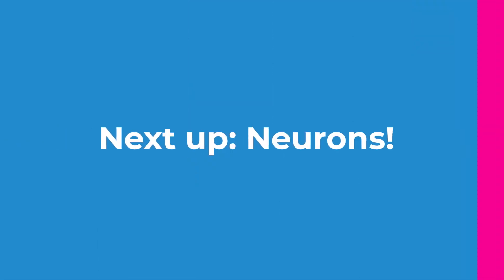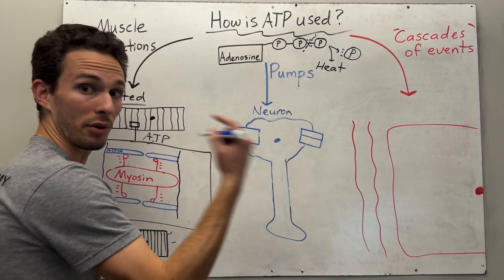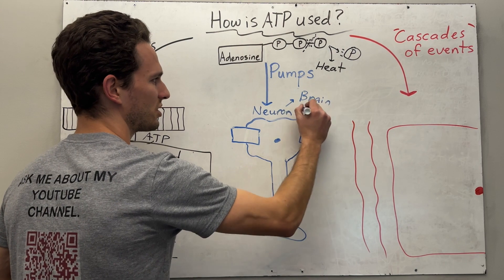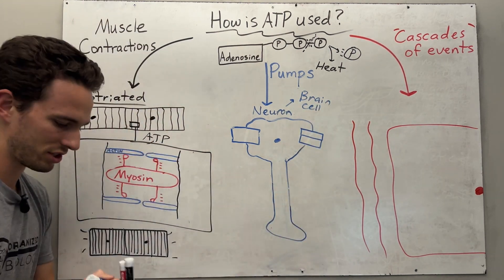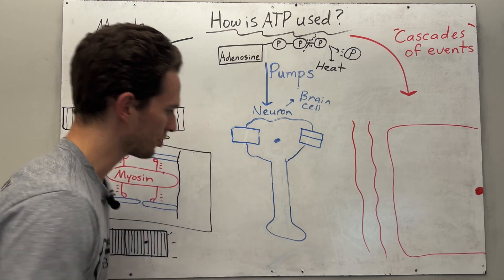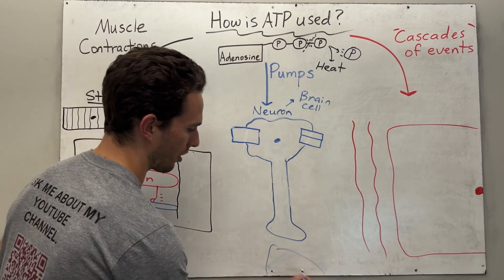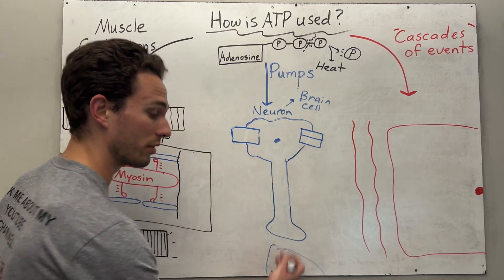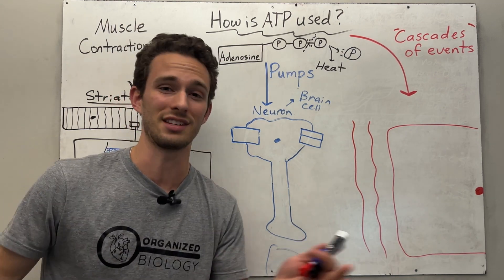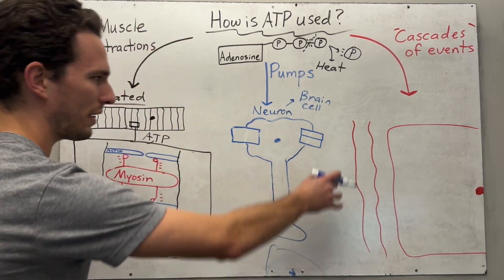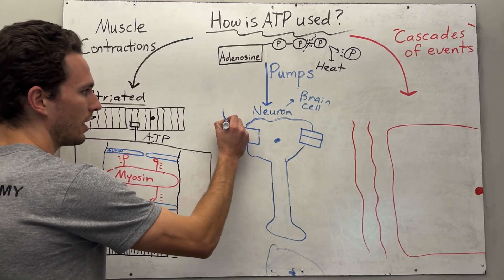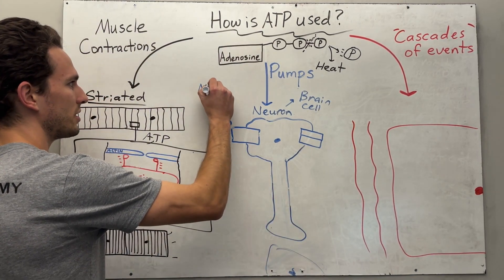Now let's move into our next cell type, which will be called a neuron. A neuron is just a fancy name for a brain or spinal cord cell. Brain cells have to send signals to one another — neuron to neuron — and that is thought and feeling and all the things you do with your mind. To get this to work, we have a very important pump called the sodium-potassium pump.